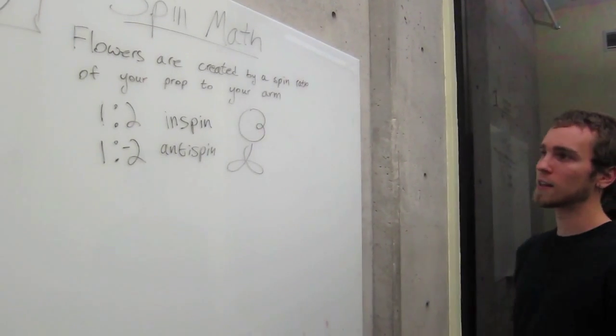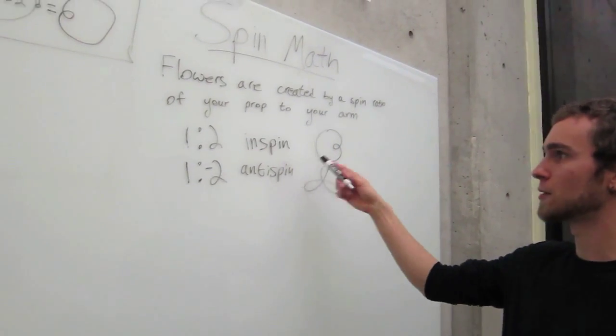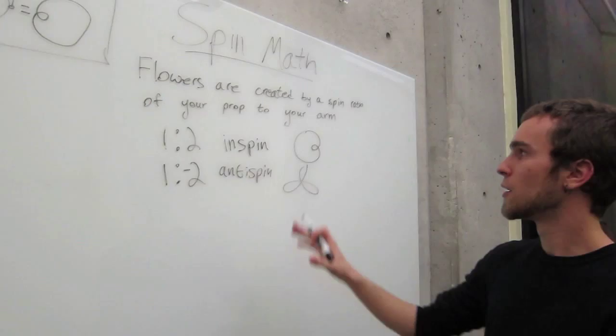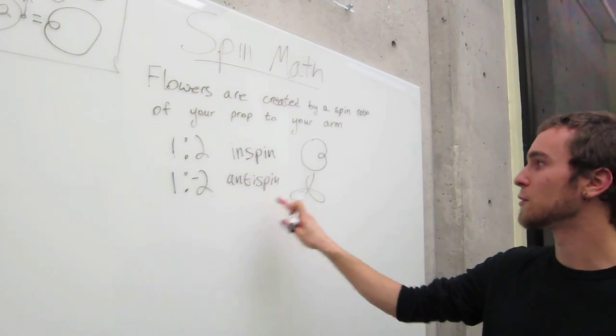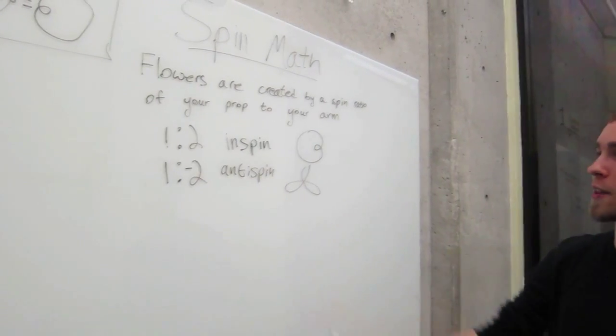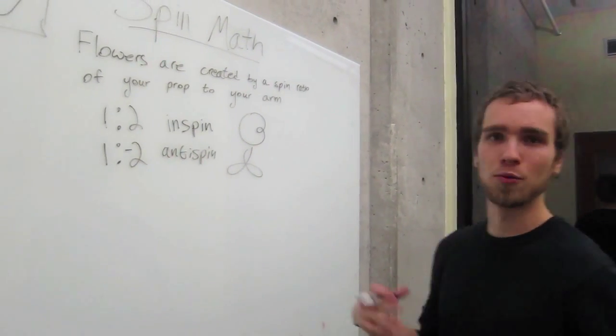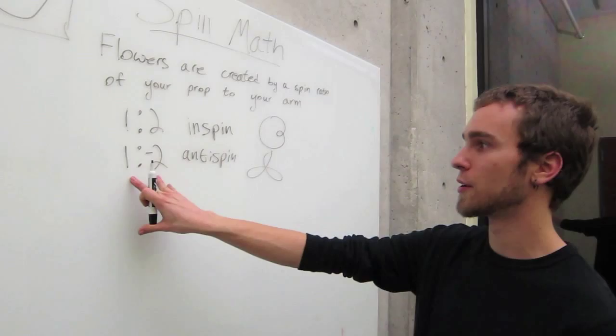So as a general rule for in-spin patterns, the number of petals is equal to the number of rotations of the prop minus one, and an anti-spin pattern is equal to the number of rotations of the prop plus one. And the reason that is, is about relative rotation of one to the other, like these going in opposite directions.